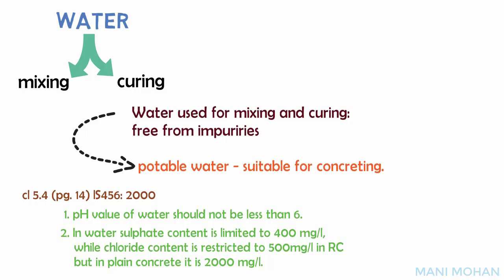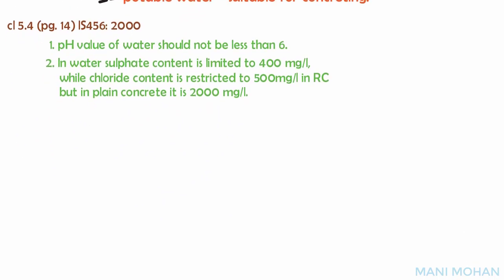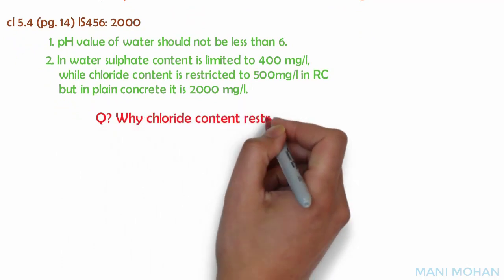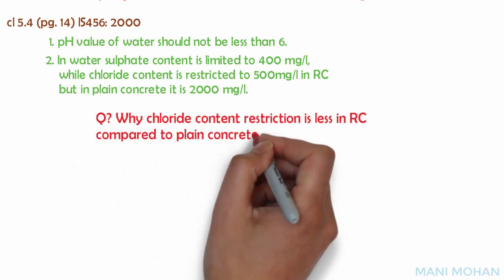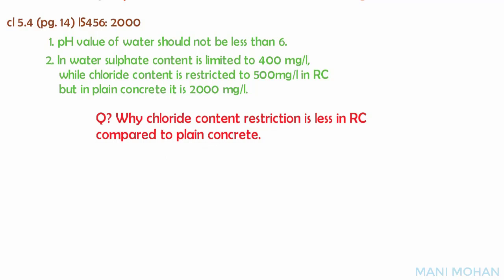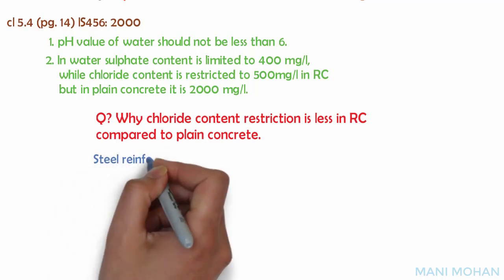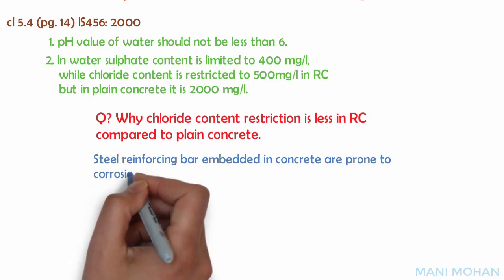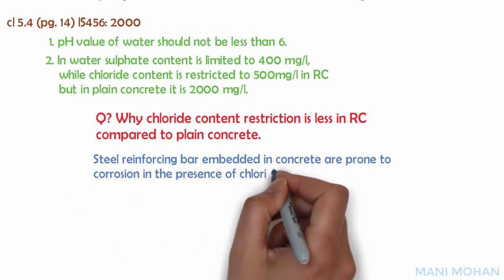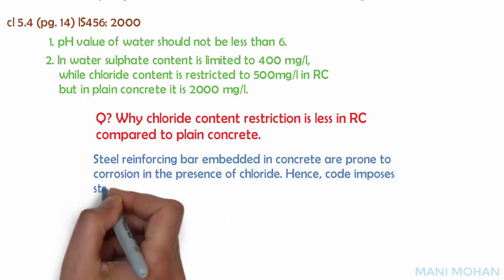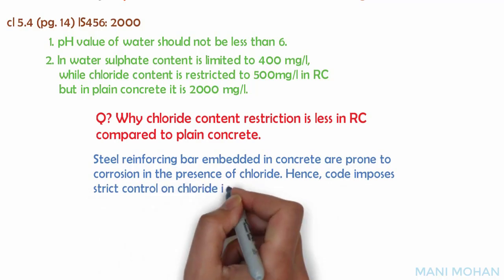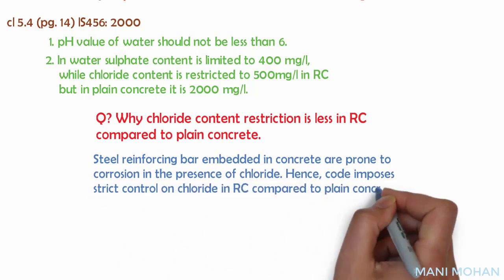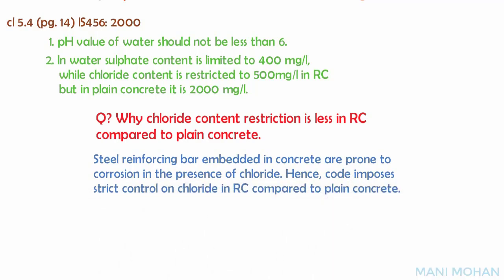The question is: why is chloride content restriction lower in reinforced concrete compared to plain concrete? The answer is that steel reinforcing bars embedded in concrete are prone to corrosion in the presence of chloride. Hence, the code imposes a stricter control on chloride in reinforced concrete compared to plain concrete.